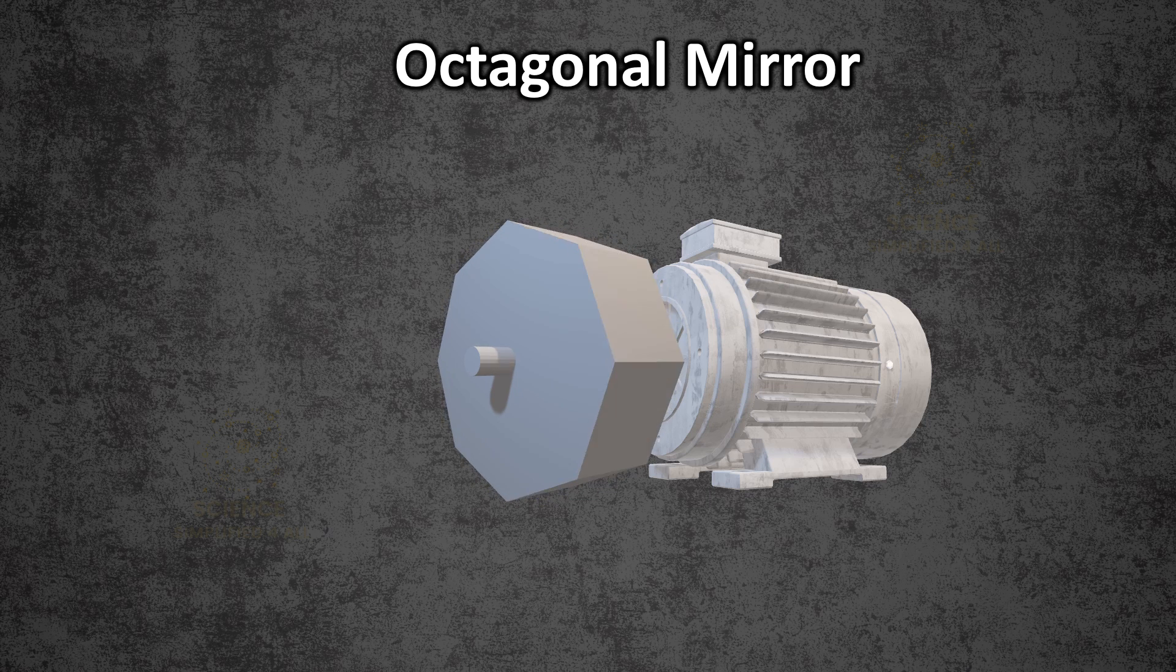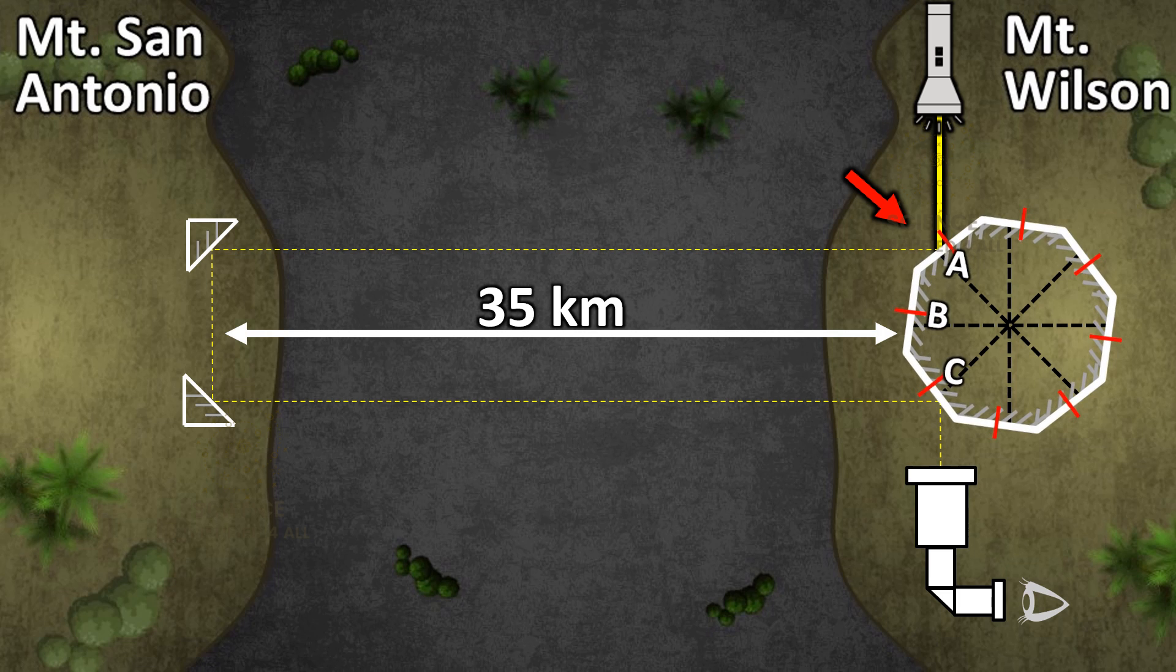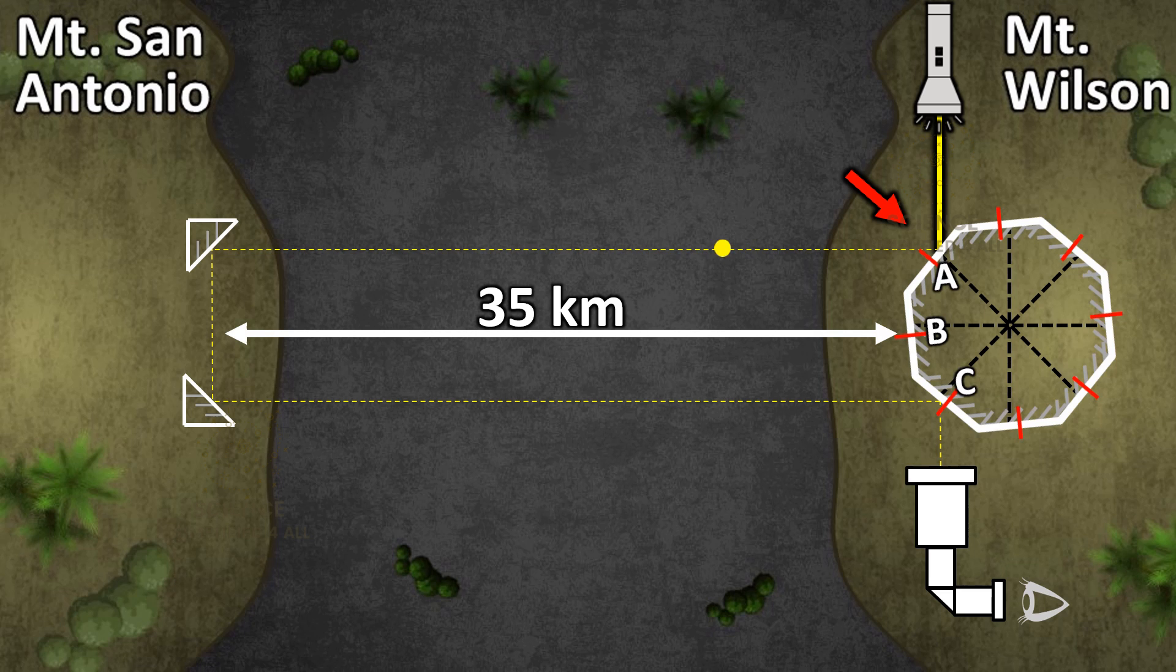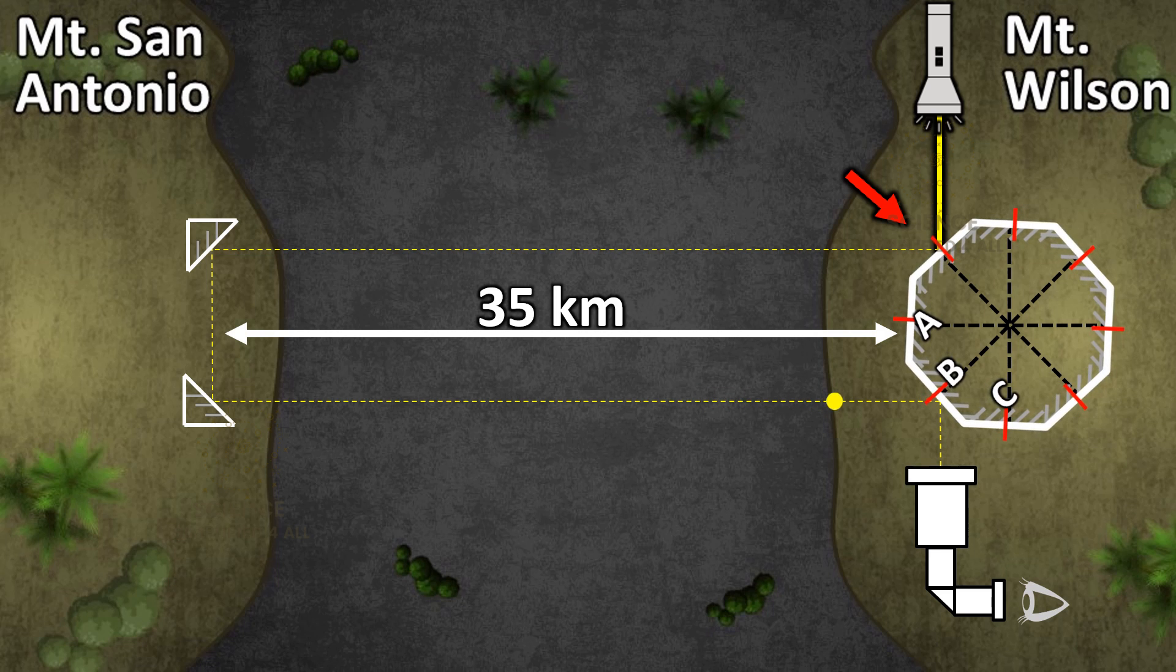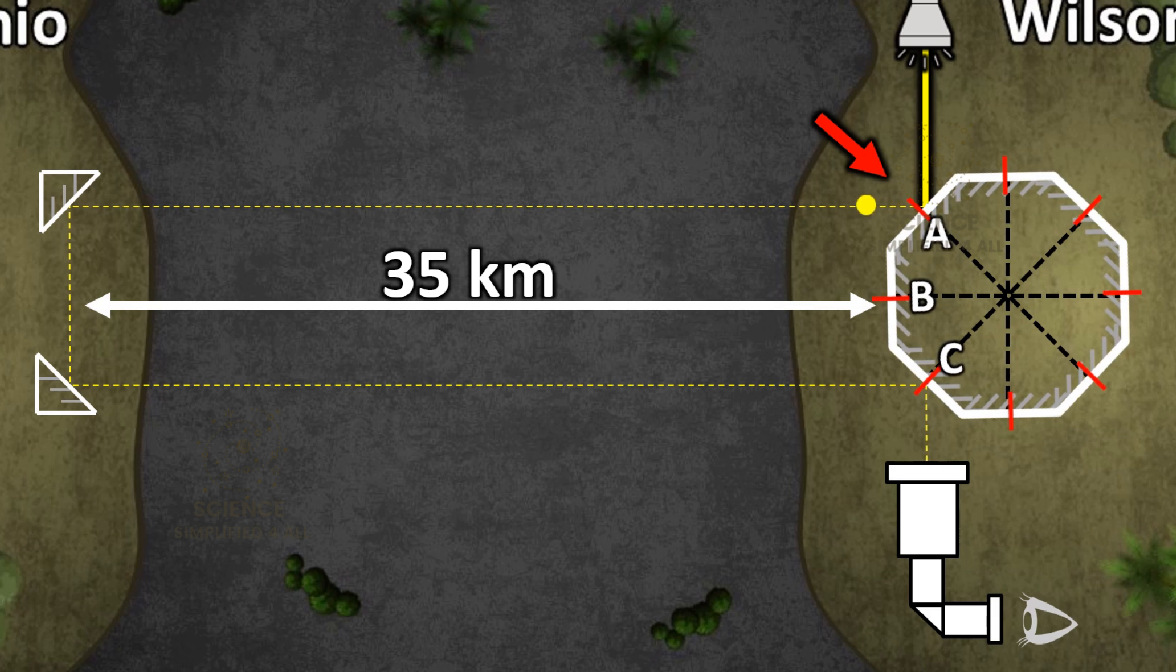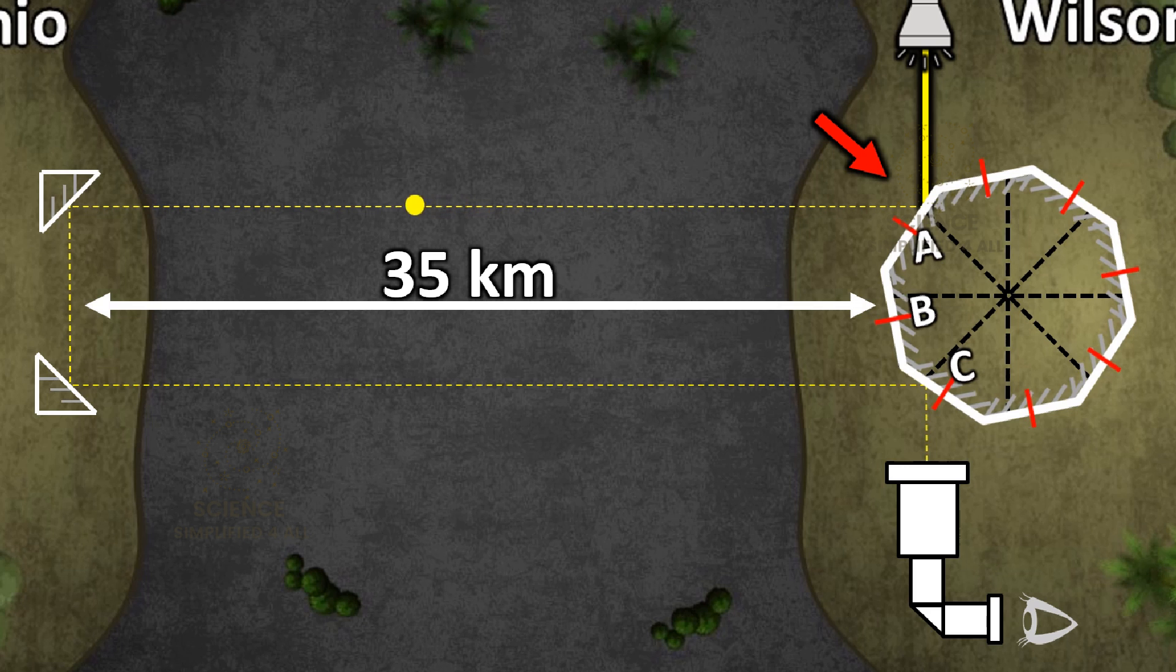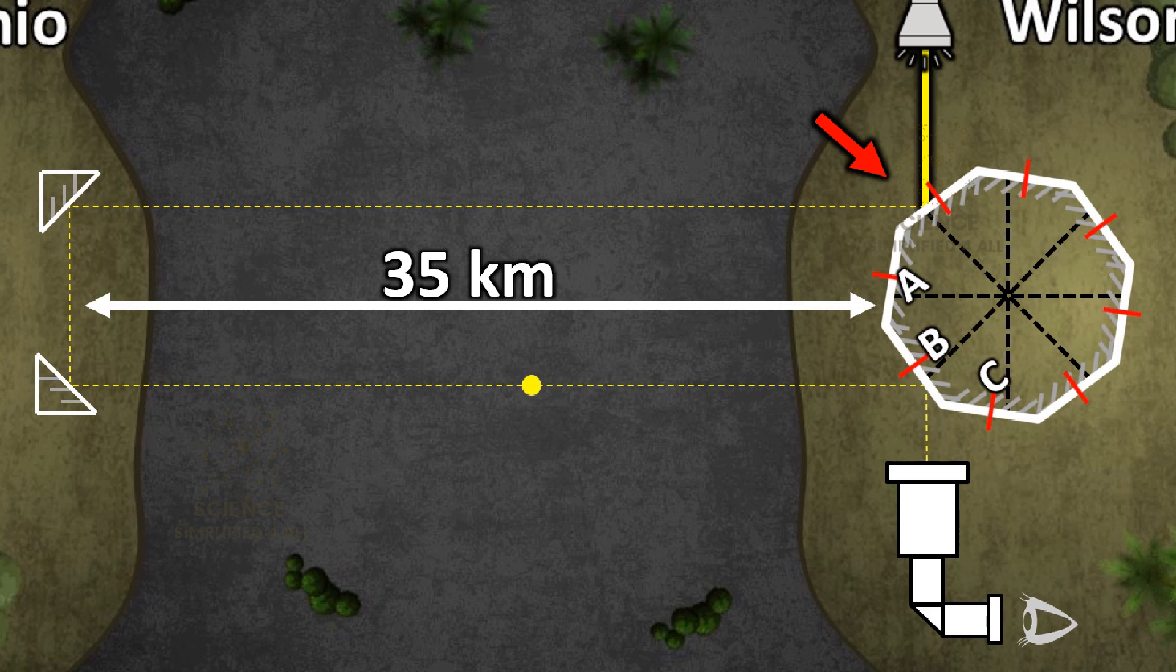Now, Michelson gradually increases the speed of the motor. At a specific rotation speed, something remarkable happens. By the time the light completes the 70-kilometer round trip, the octagonal mirror has rotated precisely 45 degrees. This means face B, the next face in sequence, is now at 45 degrees to the light path. The returning light reflects perfectly into the telescope and the observer sees the arc lamp again. This phenomenon, seeing the light again through the telescope, happens only at a specific speed of rotation. That is the speed at which, by the time light travels the 35 plus 35 equals 70 kilometers, the mirror has rotated exactly 45 degrees, allowing face B to take the place of face C and direct the light into the telescope.